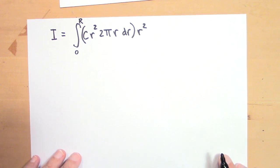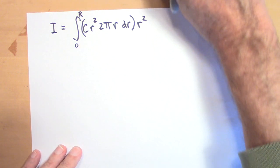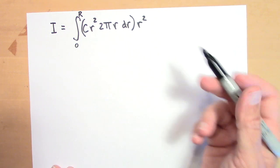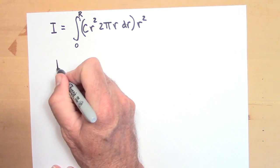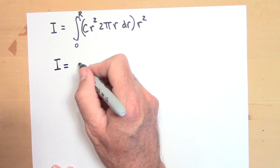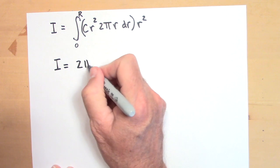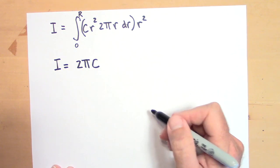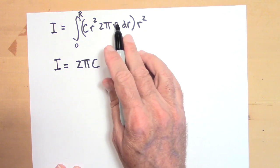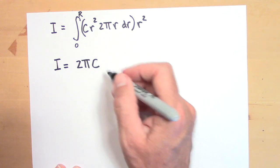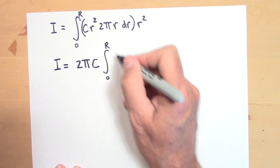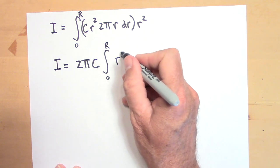All right. So let me pull out some of the constants and put the r's together. And so I for this disc is going to be, I'm going to pull out the two pi C out of that integral, two pi C. And then I get r squared times another r to the first power times an r squared. So that's r to the fifth power. So that's the integral from zero to R of r to the fifth power dr.